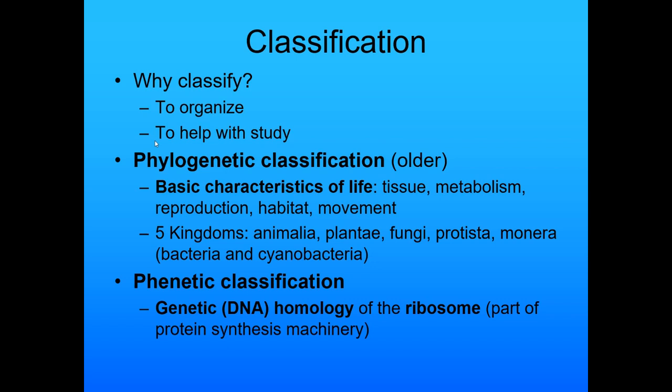In the natural selection simulation, you were told that you did a phylogenetic classification — and you did, but you sort of didn't. Phylogenetic classification is actually an older system. It's based on the basic characteristics of life, like tissue, metabolism, reproduction, the kind of habitat, the way animals move, and all of that kind of stuff. Back then, we used to actually have five different kingdoms that we distinguished.